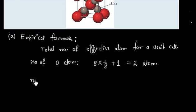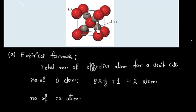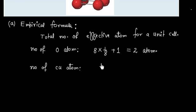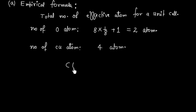We can also calculate the number of copper atoms. We have a copper atom here, another copper atom here, here, and here — so we have 4 copper atoms, and all are inside this cube, so we will have effectively 4 copper atoms. We can write the formula: we have 4 copper atoms and 2 oxygen atoms, giving an empirical formula of Cu₂O.